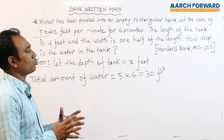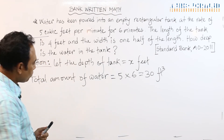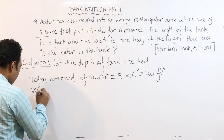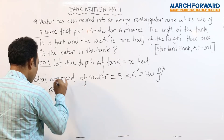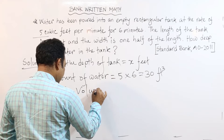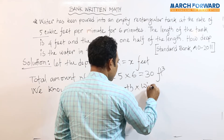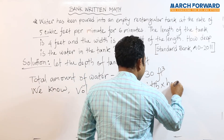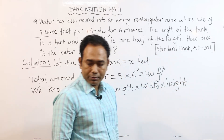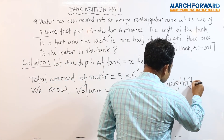Since the tank is filled with this amount of water, the volume of water equals the volume of the tank. We know that the volume of a rectangular tank equals length into width into depth — where depth is the height of the tank.